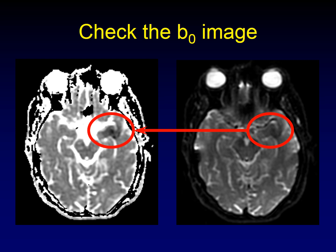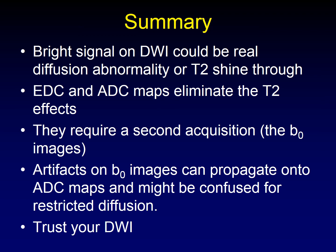So, the answer to the question we posed in the beginning is, if you see an abnormal ADC but a normal diffusion-weighted image, go to your B0 images, check out the B0 images, and see if there is an artifact there that has propagated through onto your ADC maps when there's really no restricted diffusion there. In summary, bright signal on a diffusion-weighted image could be real diffusion abnormality or could be T2 shine-through. We use EDC and ADC maps to eliminate the T2 effects and look for true restricted diffusion. These EDC and ADC maps require a second acquisition that we call the B0 images, and we frequently ignore those B0 images. But artifacts on the B0 images can propagate onto the ADC maps, and they might be confused for restricted diffusion. To answer the question we posed at the beginning, trust your DWI.